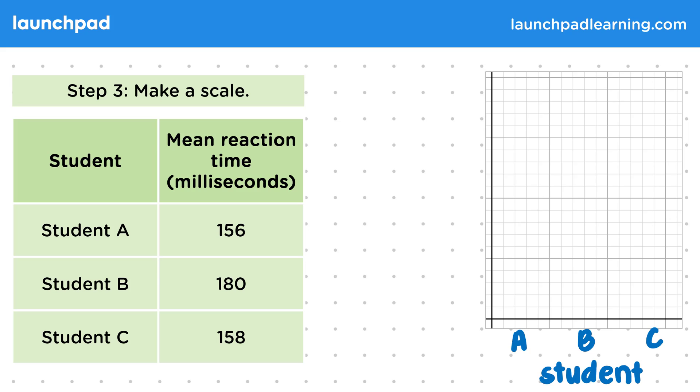There are 20 small squares available on the Y axis. So if we make 200 the value at 20 squares, then one square is 200 divided by 20, which equals 10 milliseconds. Therefore, 10 milliseconds will be the interval on the scale on the Y axis.